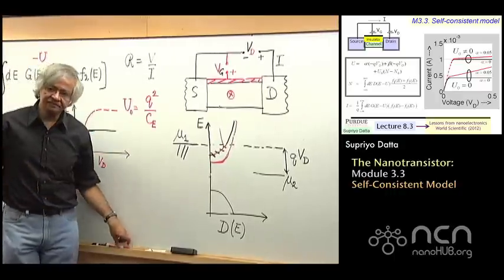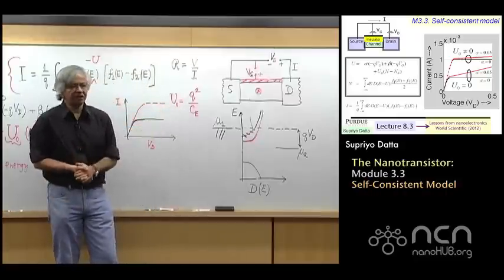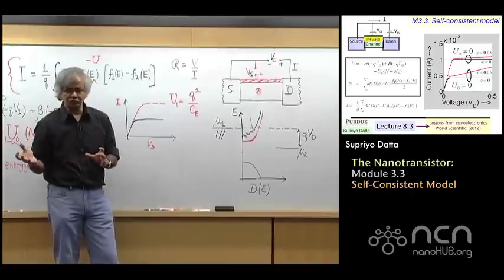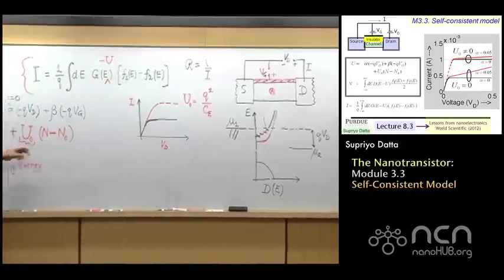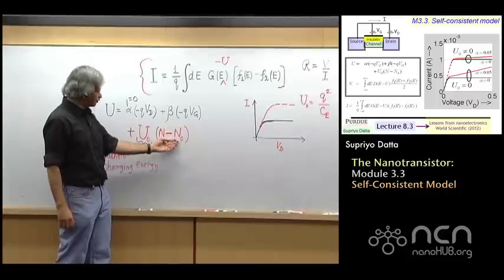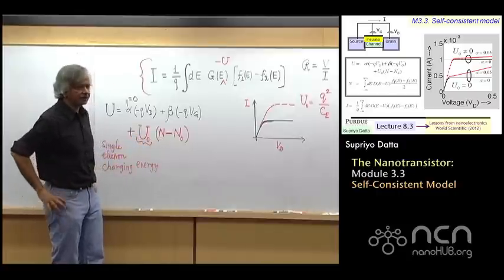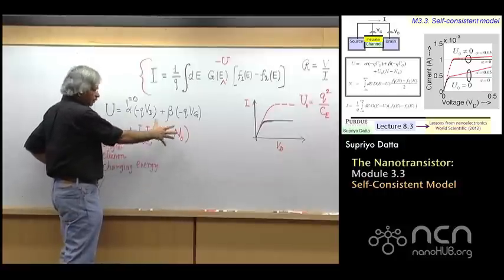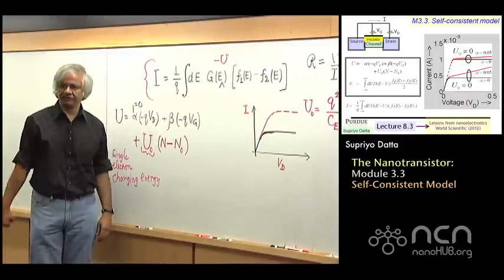Now usually what happens is in large devices, this number is fairly small, the single electron charging energy. Namely, if I put one electron on there, the potential might change by a microvolt or a nanovolt, very small number. Then why are we worrying about it? Well, that's because even if this is a microvolt, but if the number of electrons is hundreds of thousands, then of course the product can be significant. The product would still need to be included in our model. And that's the situation with large devices, that one electron doesn't make a difference, but then there's lots of electrons involved, so the product is important.